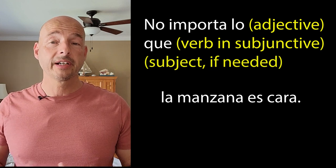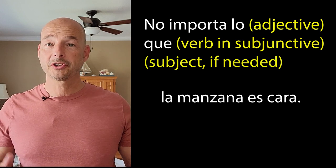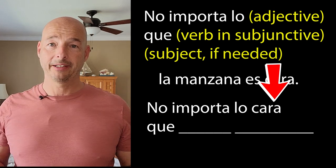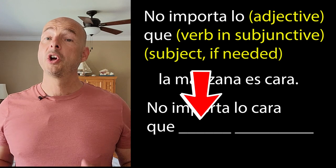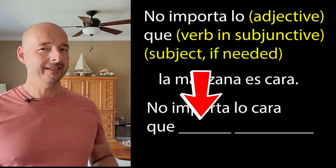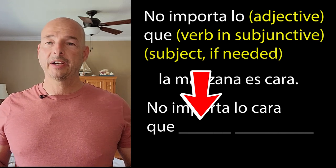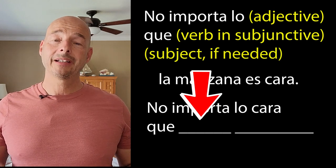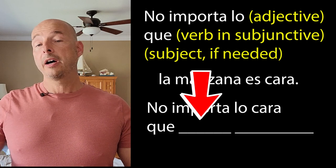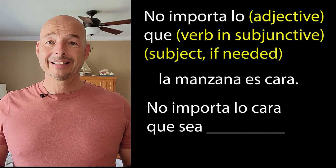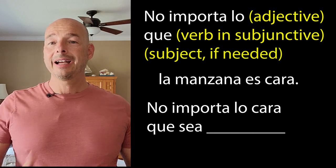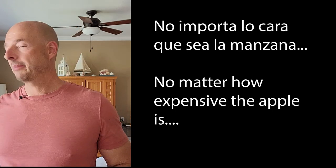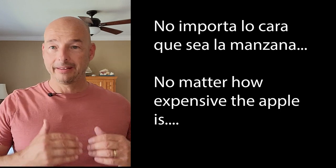Let's go ahead and see if we can translate this phrase: 'No matter how expensive the apple is.' Looking at our construction, it's going to start the same way every single time with 'no importa lo.' Our adjective — cara — goes right in here. 'No importa lo cara que.' Now right after here, this has to be in the present subjunctive. If you don't know how to conjugate into the subjunctive, I have a video to show you how. Knowing when can be the tricky part, but in this construction it will always be the present subjunctive. The present subjunctive of ser, third person, is going to be 'sea.' What are we still lacking? The subject — la manzana. We drop that in and put it all together: No importa lo cara que sea la manzana. And then whatever — I'm still going to buy it. That's our phrase.